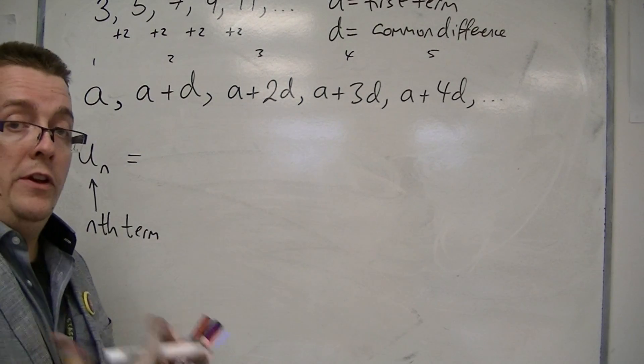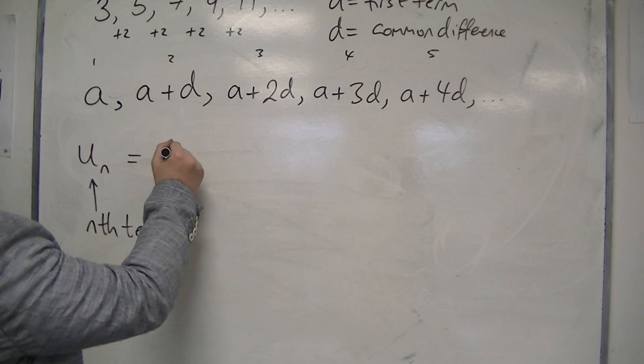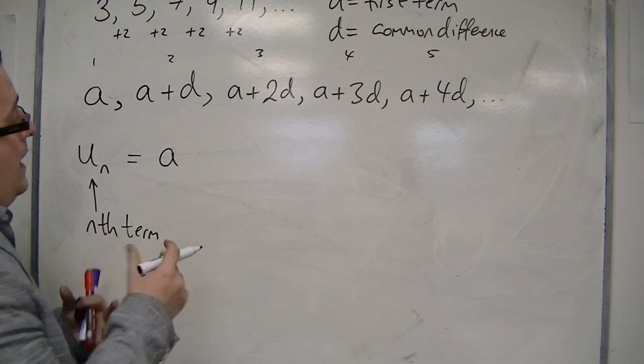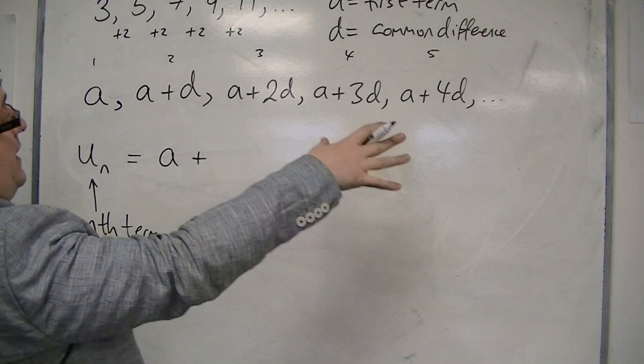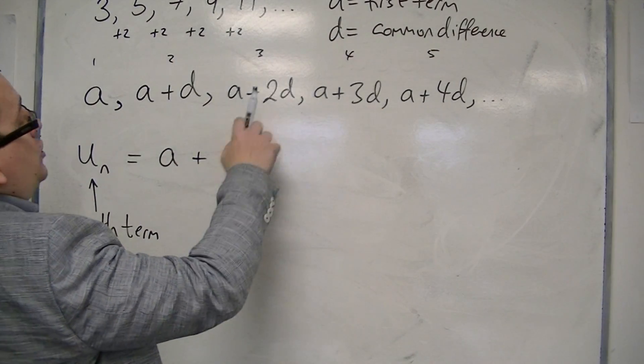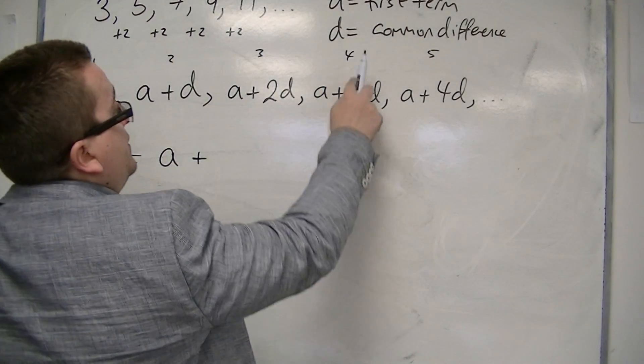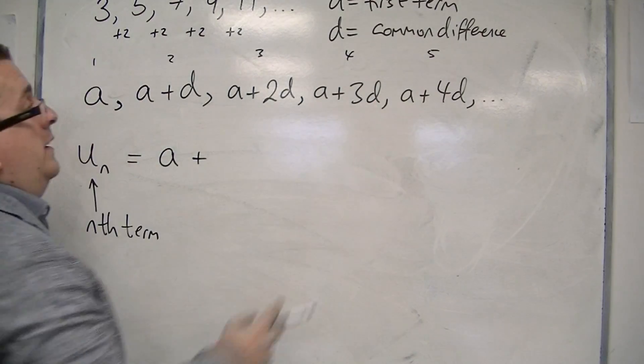all of these terms in sequence have A in it, and they also all have a D in it. But in each case, the number in front of the D is one less than the position.